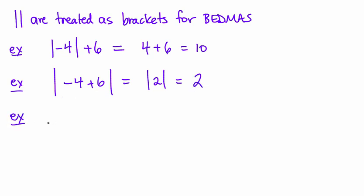If you have something like negative 1 plus the absolute value of negative 5 minus the absolute value of 10, well, you do inside these absolute values first. So negative 1 plus 5 minus 10, and now I'm just doing an integers question.